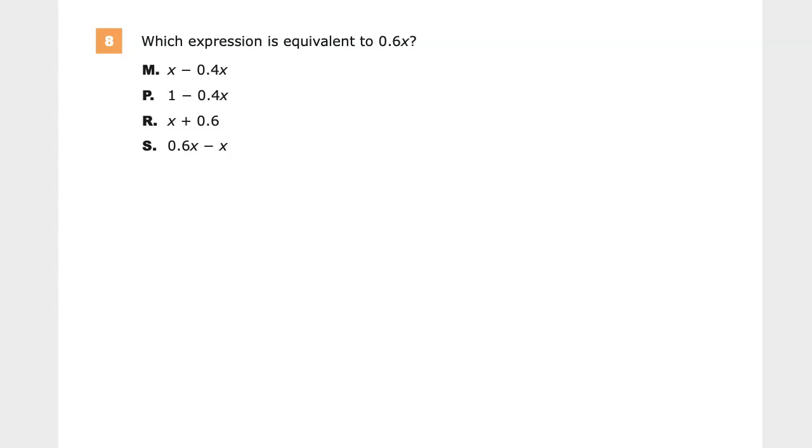A few things pop in here that matter. One of them is like terms. If we have a term with a value x on it, so this 0.6 is what's called a coefficient, this means we have 6 tenths of whatever x's value is. But you can't combine that with constant terms.